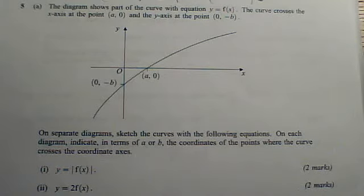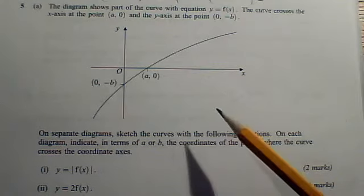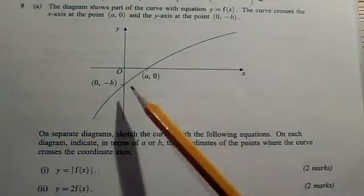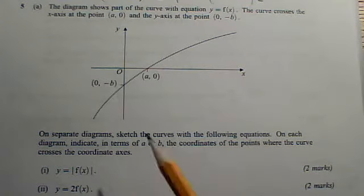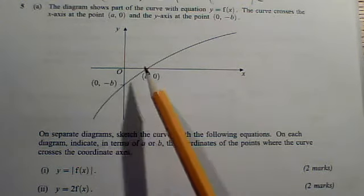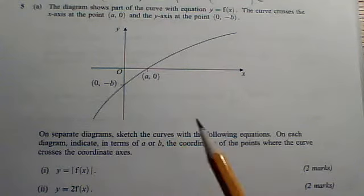Okay, here's a question all about graphs. We're given a graph, we don't know its equation, we just know a couple of points on it and its general shape, and we've got to sketch these two graphs, showing the intersections with the axes, in other words, the points corresponding to the two given points.